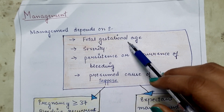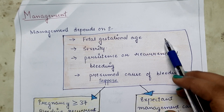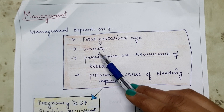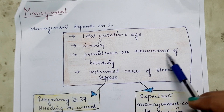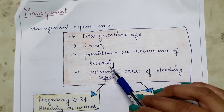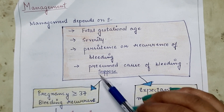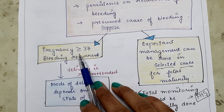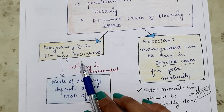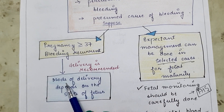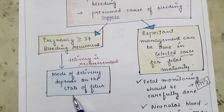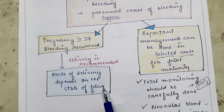Next is the management of Vasa Previa. Management depends on fetal gestational age — whether it is 37 weeks or not — the severity of the condition, whether the fetal blood vessels are compressed or ruptured, the degree of vaginal bleeding, and the persistence or recurrence of bleeding. If the pregnancy is 37 weeks or more and bleeding is recurring, delivery is recommended. The mode of delivery depends on the fetal condition: if controlled, vaginal delivery by expert hands is done; if not, cesarean section is performed.